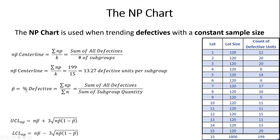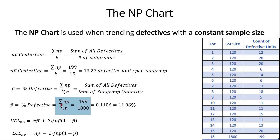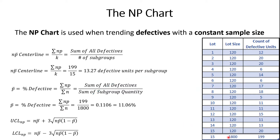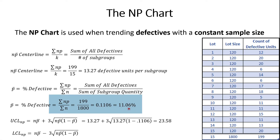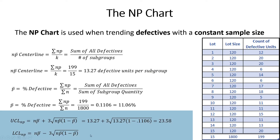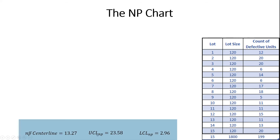The second variable is P bar — the percent defective found in our inspection. We take the count of defective items, 199 units, divided by the sum of N, which is 1,800 samples inspected across those 15 subgroups. That comes out to about an 11% defect rate. Now that we have NP bar and P bar, we can calculate the upper and lower control limits as 23.58 and 2.96. I've put those major parameters at the bottom of the slide: center line 13.27, upper and lower control limits.